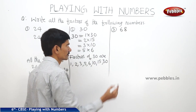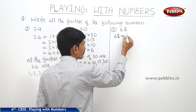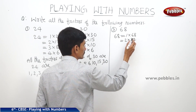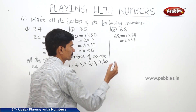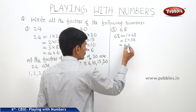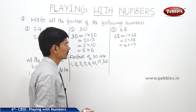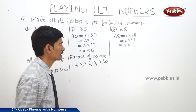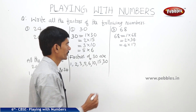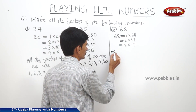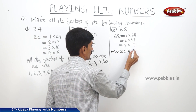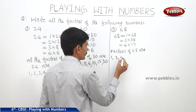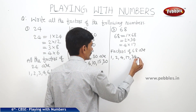The third number is 68. Writing 68 as a product of two numbers: 1 into 68, 2 into 34, and 4 into 17. It is not divisible by 3, 5, 6, 8, 9, or 10. So the factors of 68 are 1, 2, 4, 17, 34, and 68.